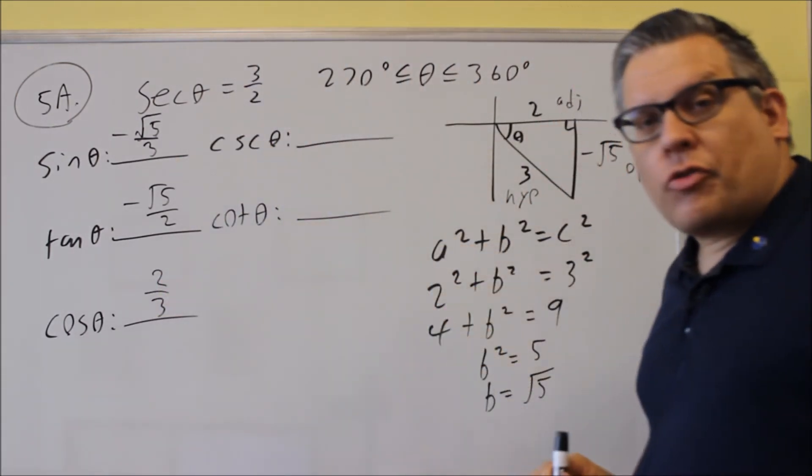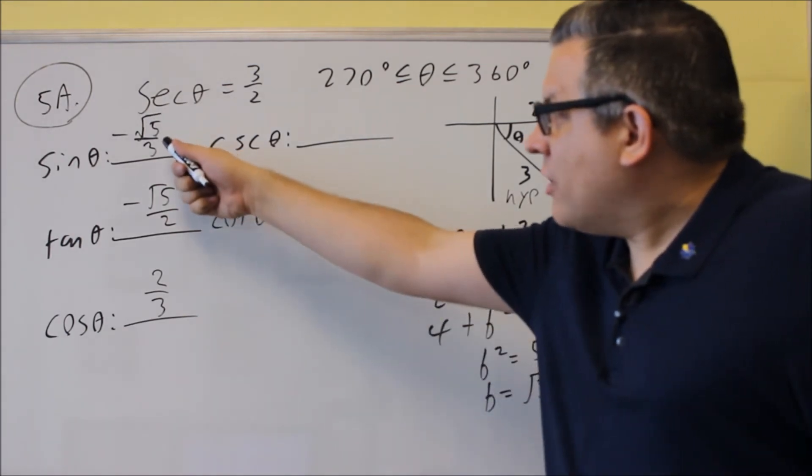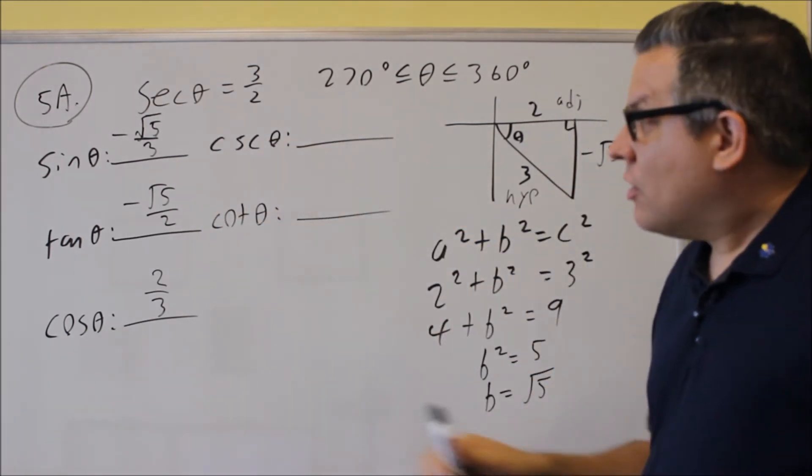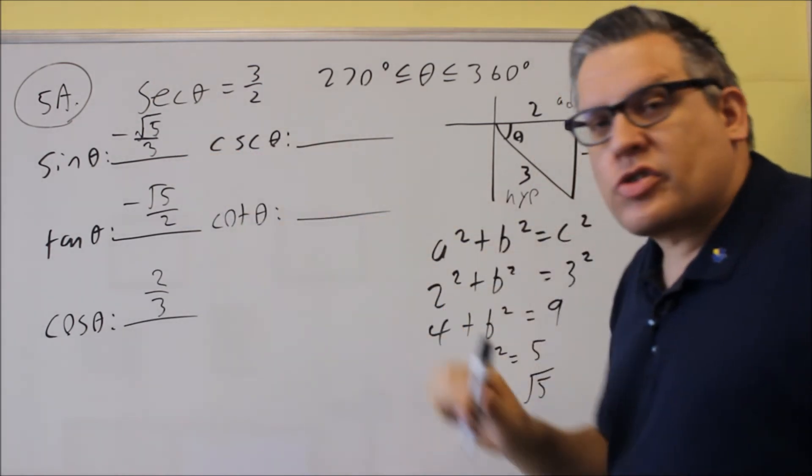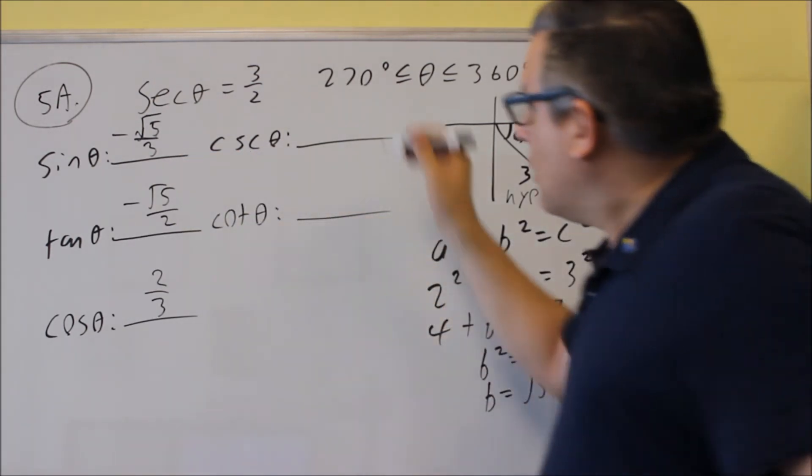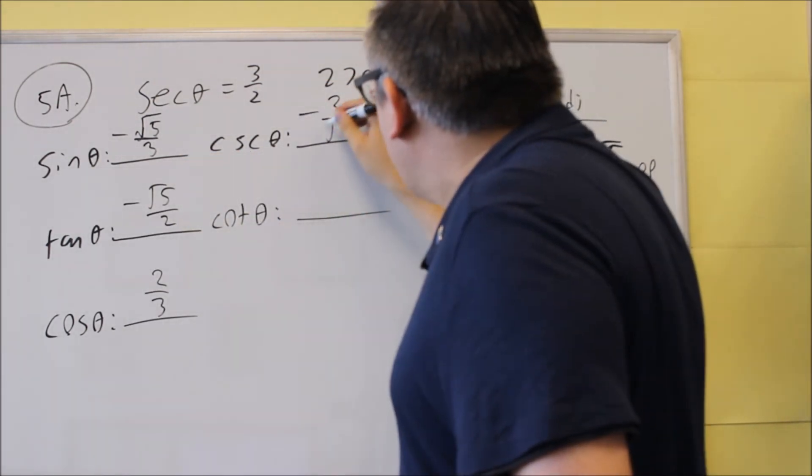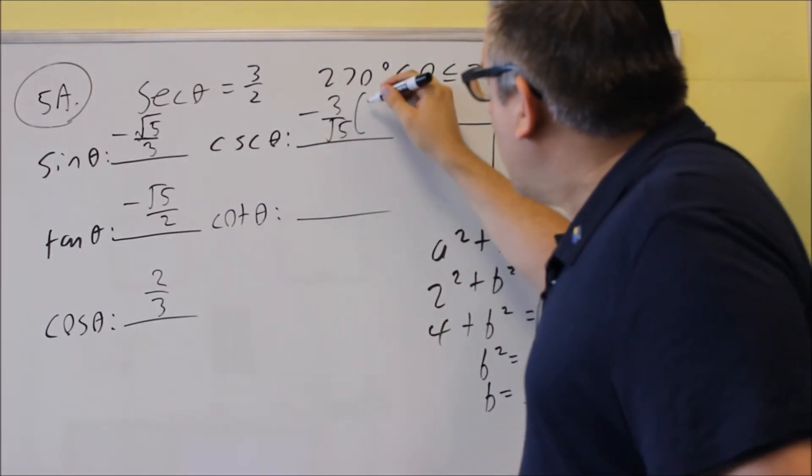These two now are going to involve reciprocals as well. Sine and cosecant, those are reciprocals. So if I want to find the cosecant, I'm going to take the reciprocal of sine. Negative three over square root of five, but we have to rationalize it.